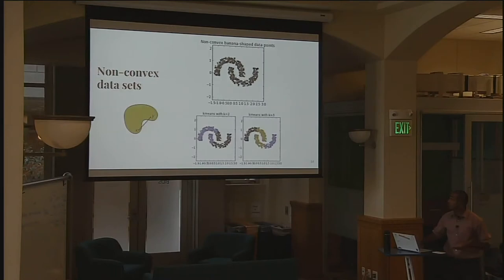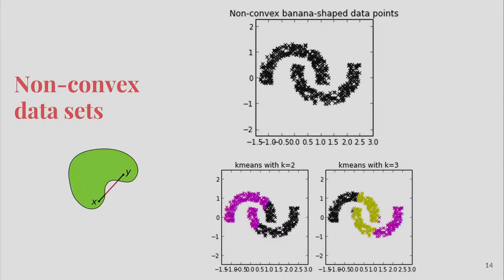Here's a non-convex dataset — the data is constructed so that you cannot draw straight lines between two points that stay within the data set. A banana shape is a canonical example, which is what's used in scikit-learn's documentation. If you try to cover these two bananas with little circular paper cutouts, K-means does pretty poorly. If you choose K equals 2, it divides left and right; if you use K equals 3, you get clearly non-banana clusters. K-means doesn't seem well suited to solve this problem, and it's not.